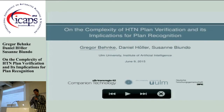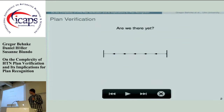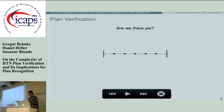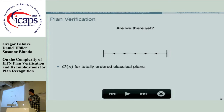The first obvious question is: what actually is plan verification? As you have already seen, it's the question 'are we there yet,' albeit in a quite different manner than introduced last year at ACAI. It's basically the question: given a plan and a planning problem, is this plan a solution to the planning problem or not? For classical planning that's fairly easy, because we only have to check whether the plan is executable in the initial state and whether it reaches the goal state or not.